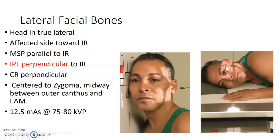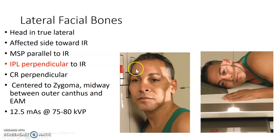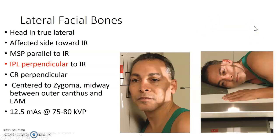Lateral facial bones are really similar to the lateral skull in terms of positioning. You want to make sure the mid-sagittal plane and interpupillary line are lined up. Make sure the patient is in true lateral — I always stand right in front of them and look at the orbits straight across, forehead to chin. You'll center directly to the zygoma, midway between the outer canthus and EAM. It can be upright or recumbent. If they have really big shoulders, you may have some OID.